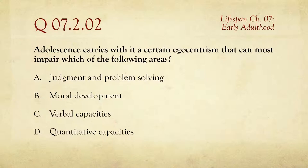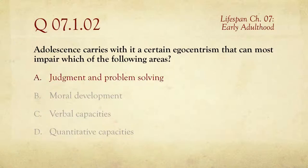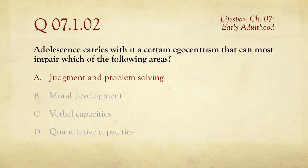The egocentrism of adolescence is actually associated with judgment and problem solving, mostly because the egocentrism makes it difficult to see other people accurately, or your place, or your effects on them, or to influence empathy. So it's going to influence a lot of that.